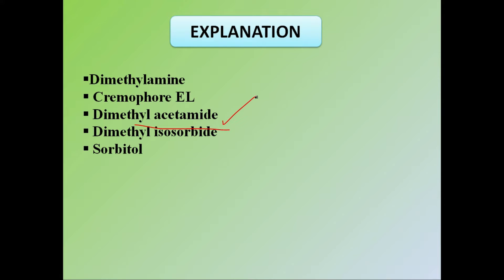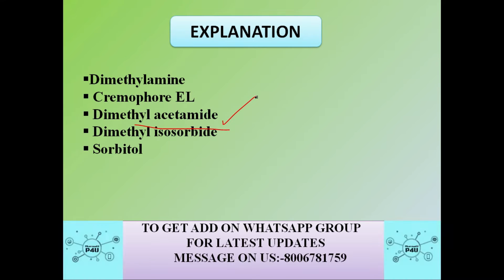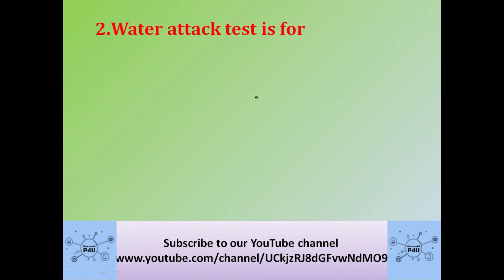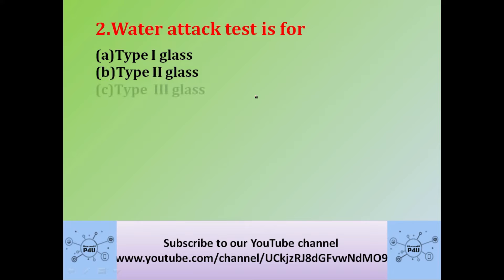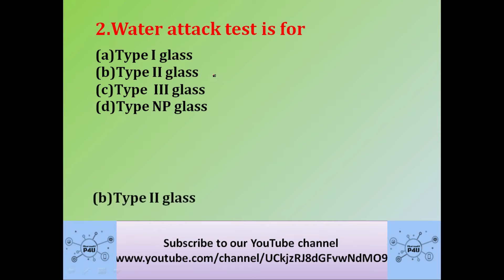Moving on to the next question: the water attack test is for — option A: Type 1 glass, option B: Type 2 glass, option C: Type 3 glass, option D: Type 4/NP glass. The correct answer is Type 2 glass. This question is very important and is asked every year in competitive exams.